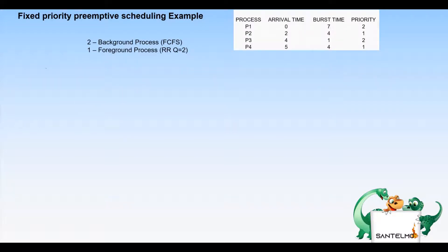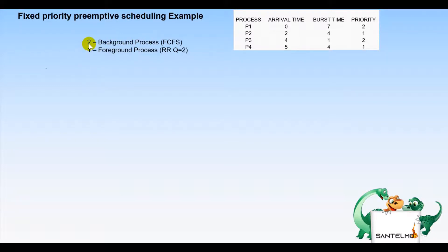The example here follows the fixed priority preemptive scheduling algorithm with two queue divisions: foreground and background. Foreground processes (denoted as priority 1 in the table) are given the highest priority and use round robin with a quantum of two. Background processes (denoted as priority 2) use first come first serve.